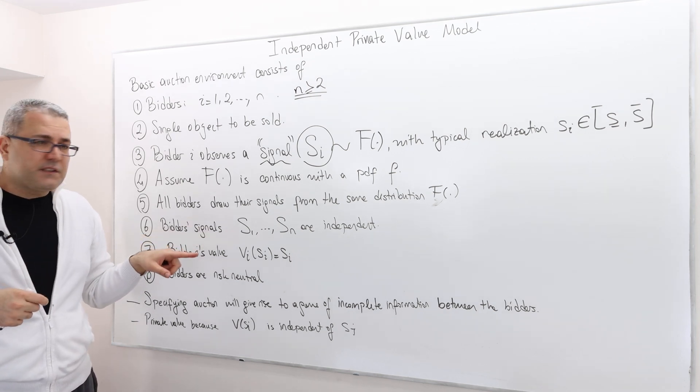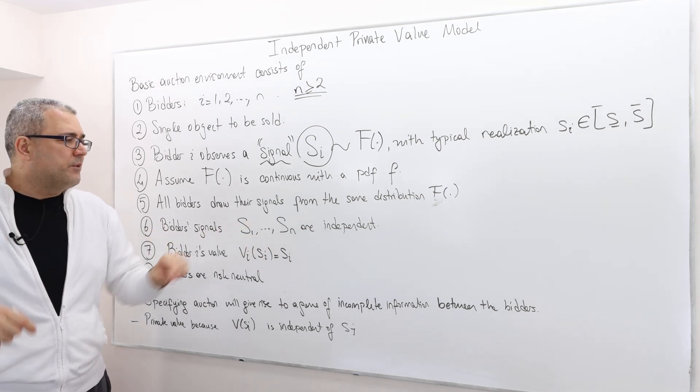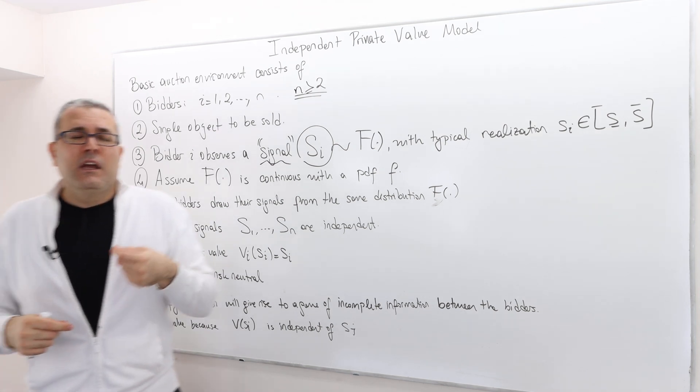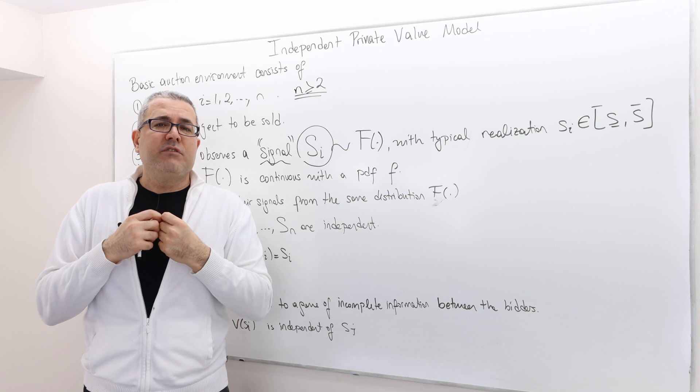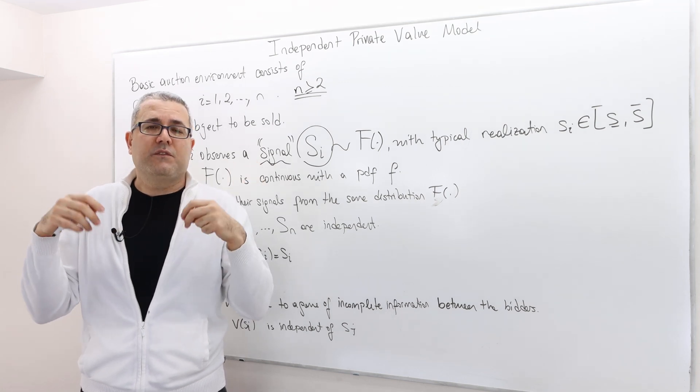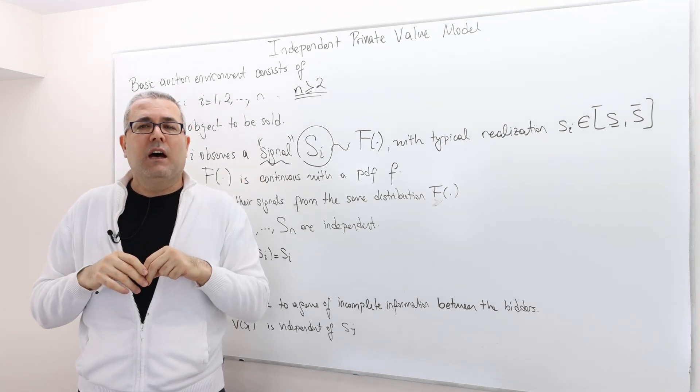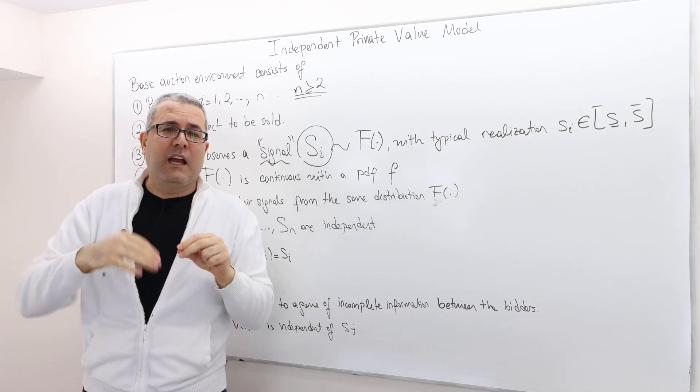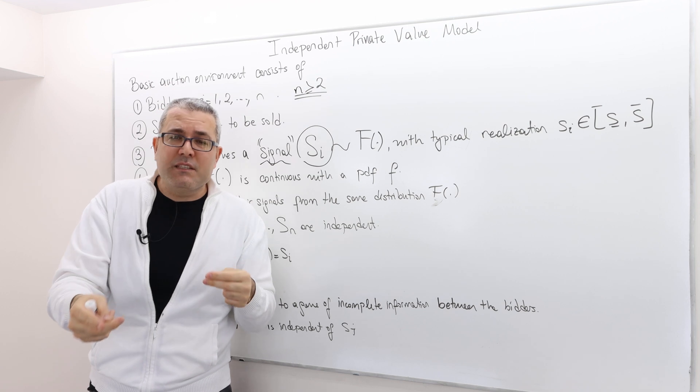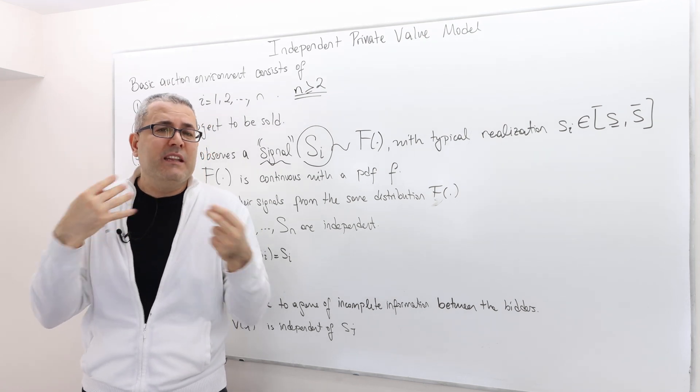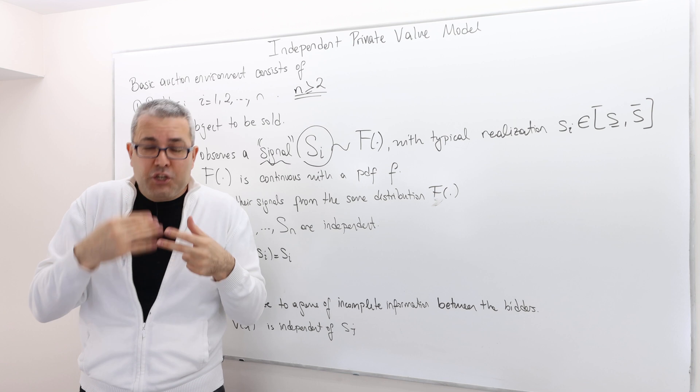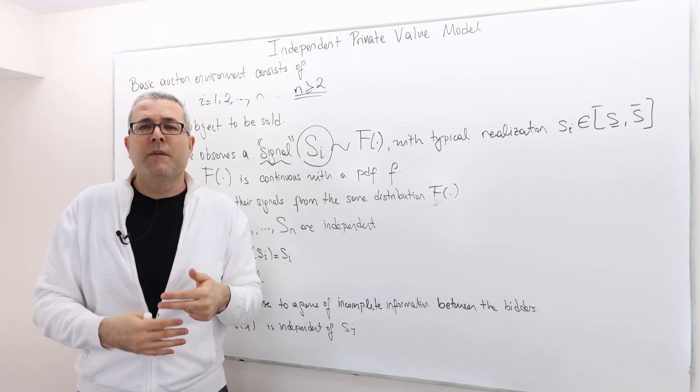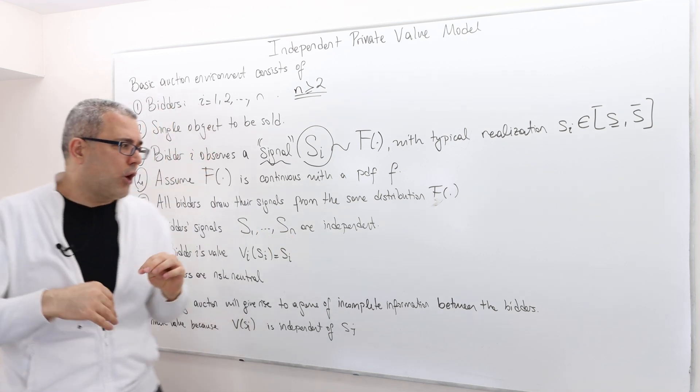Bidders' signals s1 all the way up to sn are independent. Meaning, if I receive this signal—the worth of this house, some signal si equal 100k—the likelihood that you will get exactly the same signal is not going to be different conditional on that I got the same signal. So the signals are independently drawn.